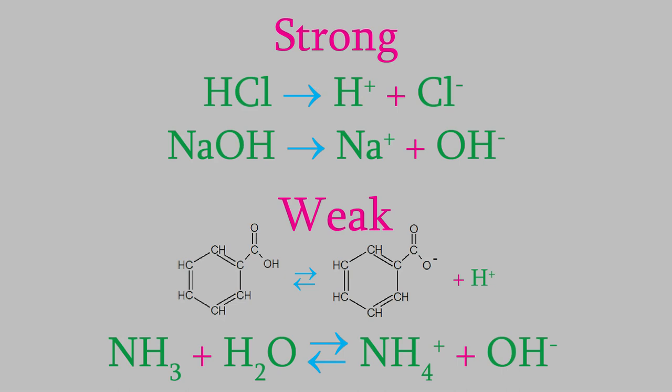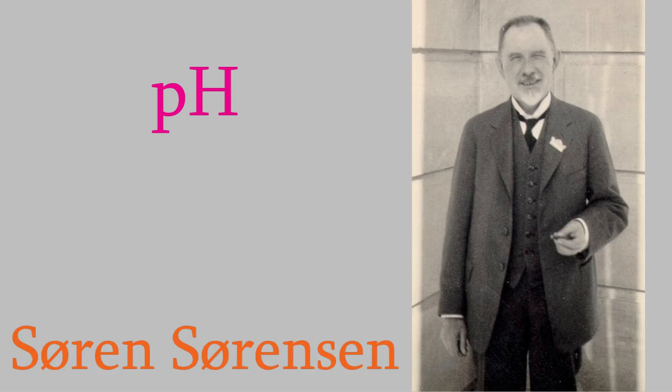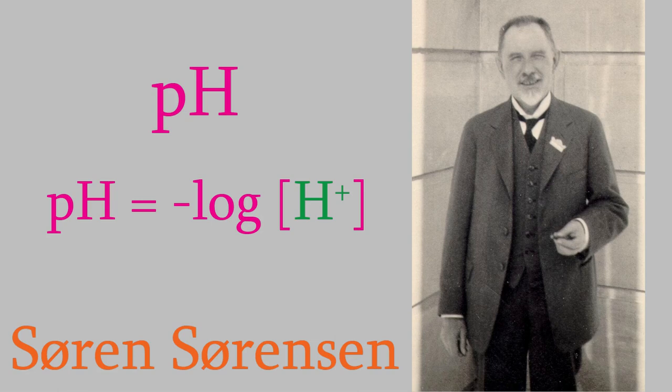We do that by giving what's called the pH of the solution, which is simply a way of describing the concentration of H-plus ions in a solution, and was invented in 1909 by the Danish chemist Soren Sorensen. The pH is the negative of the logarithm of the hydrogen concentration.